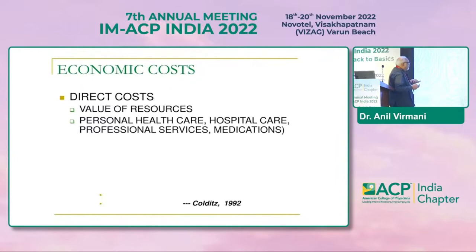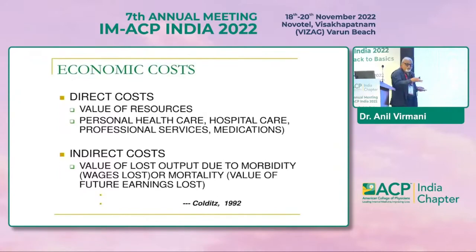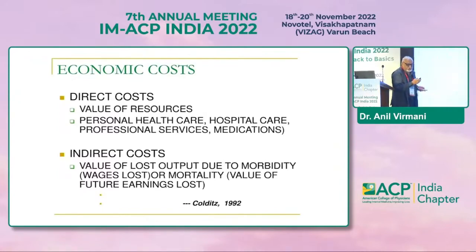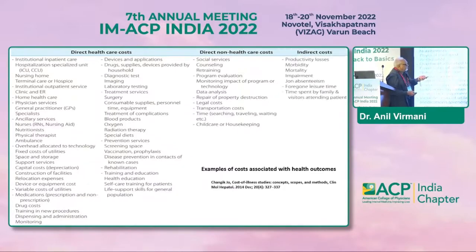Let's look at some of the costs. Direct costs include the value of resources: personal health care, hospital care, professional services, medications, etc. There are also certain indirect costs — the value of lost output due to morbidity, as with an employee getting sick, or mortality such as future earnings lost when a young person dies. There are direct non-health care costs like social services, counseling, transportation, and time; and indirect costs like morbidity, impairment, and absenteeism. Added up, the total is enormous.